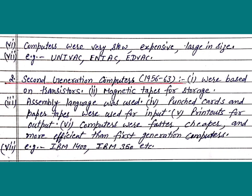Number 2: Second generation computers from 1956 to 1963. Point 1: Were based on transistors. Point 2: Magnetic tapes for storage. Point 3: Assembly language was used. Point 4: Punched cards and paper tapes for input. Point 5: Printouts for output. Point 6: Computers were faster, cheaper and more efficient than first generation computers. For example: IBM 1400, IBM 350, etc.